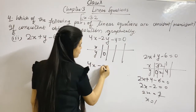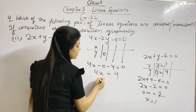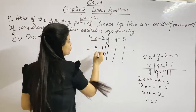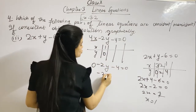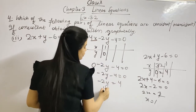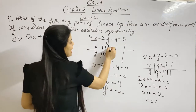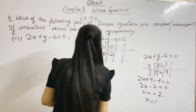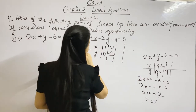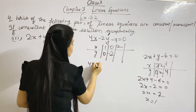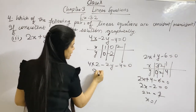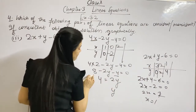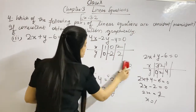For the second equation 4x minus 2y minus 4 equals 0: when x is 0, minus 2y minus 4 equals 0, so minus 2y equals 4, giving y equals minus 2. When x is 2, 4 plus h minus 2y equals 4, so y equals 2.